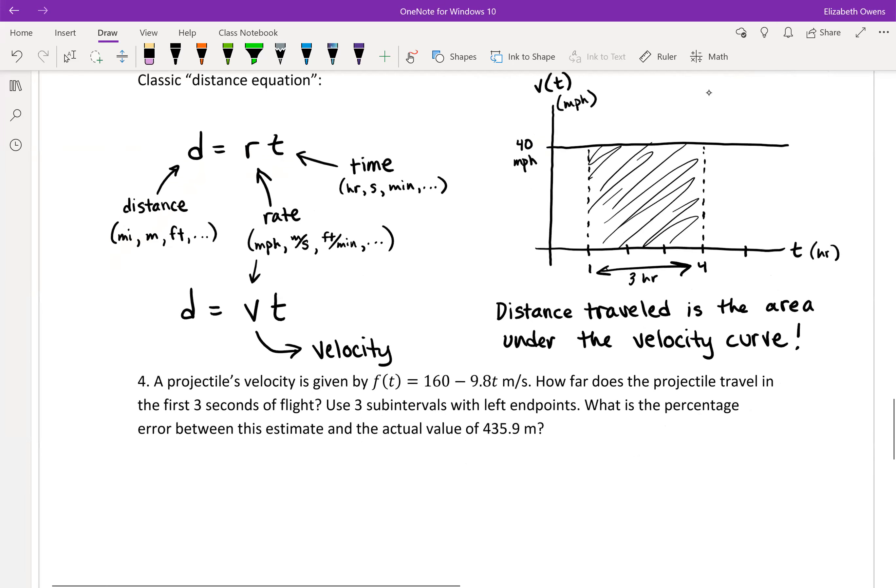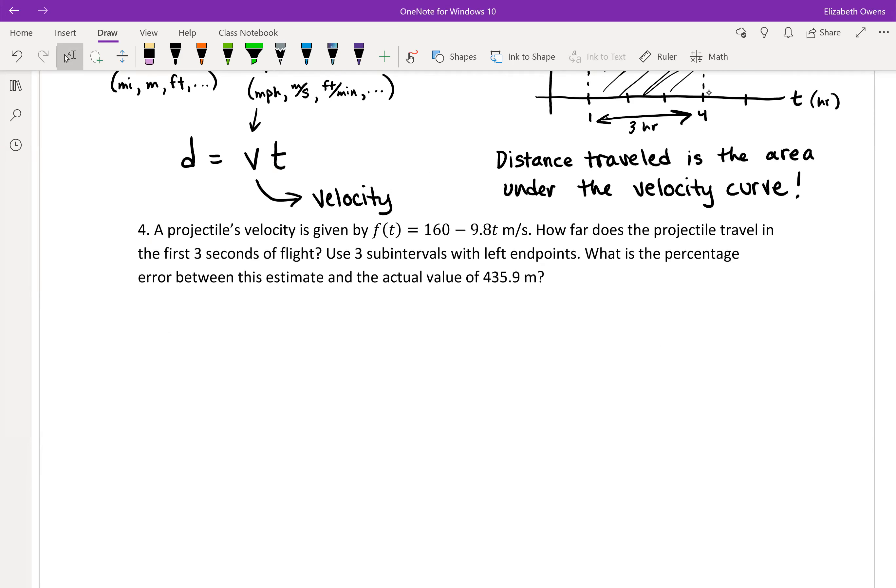In this problem, we're told that a projectile's velocity is given by f(t) equals 160 minus 9.8t meters per second. How far does the projectile travel in the first three seconds of flight? Use three subintervals with left endpoints. What is the percentage error between this estimate and the actual value of 435.9 meters?